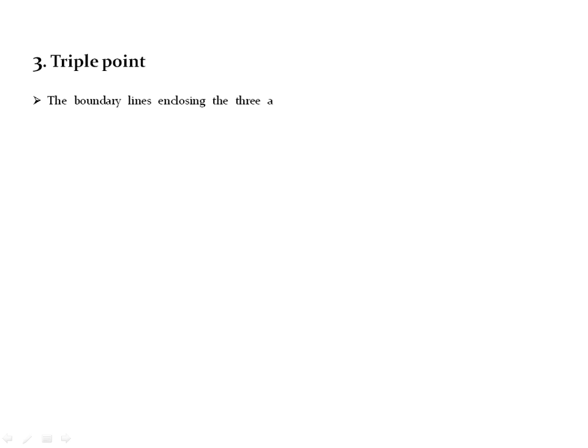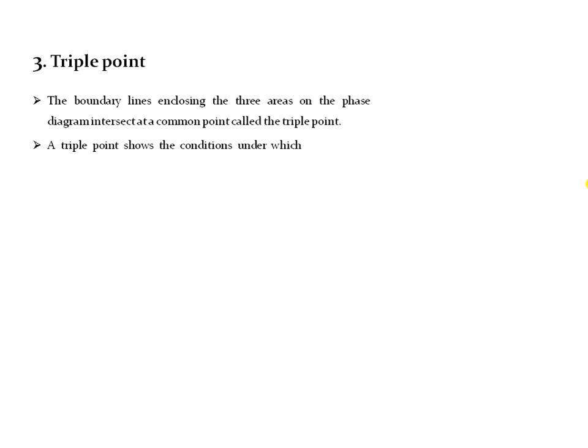Now we will move towards the triple point. The boundary lines enclosing the three areas on the phase diagram intersect at a common point, and that intersection point is known as the triple point of the one-component system. This triple point shows the conditions under which all three phases — solid, liquid and vapor — can co-exist in equilibrium. It is the point of intersection of all three curves: the sublimation curve, melting point curve and vaporization curve.